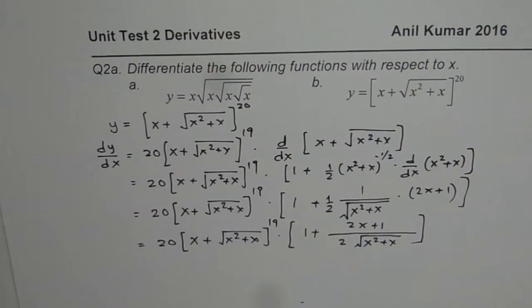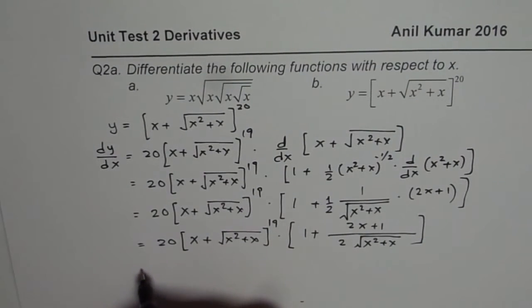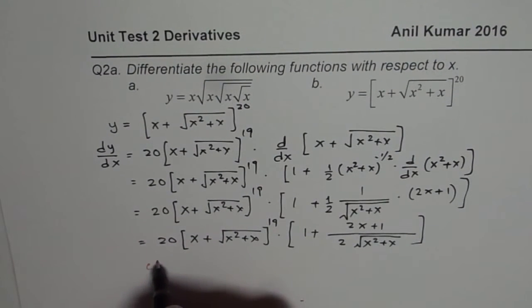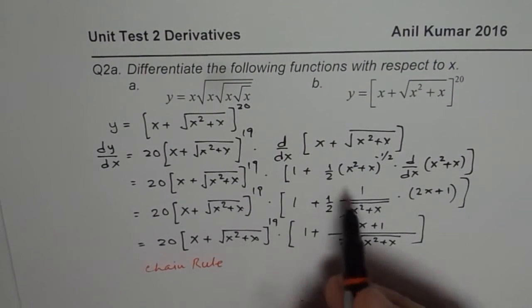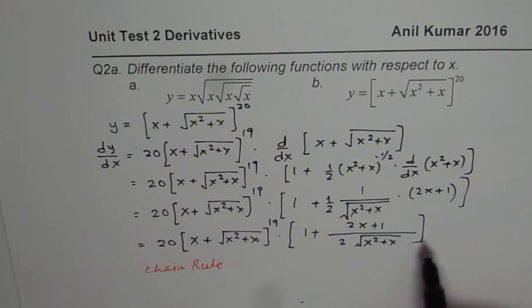So what you notice here is that we have a combination of chain rule. You have a couple of chains, as you can see, along with the product and quotient rule. So that is a very interesting question to practice. I hope that helps. Thank you.